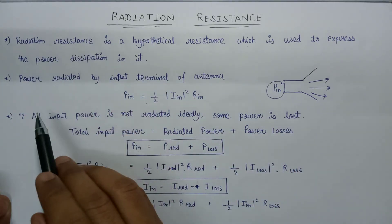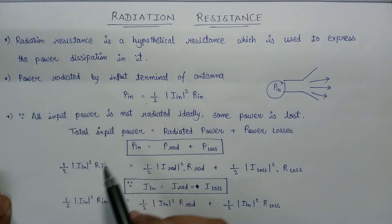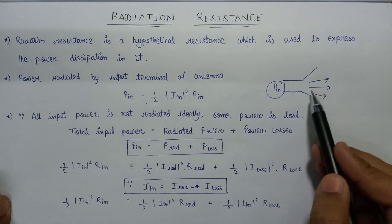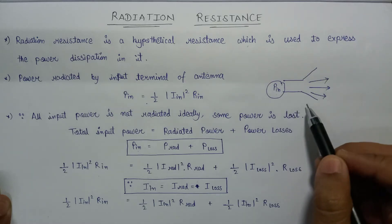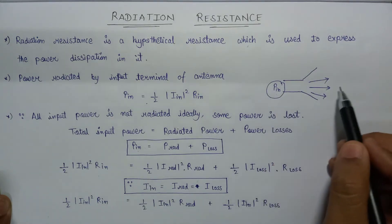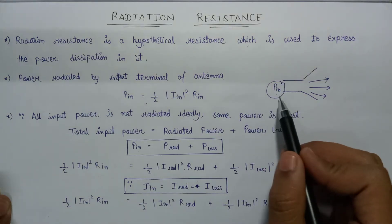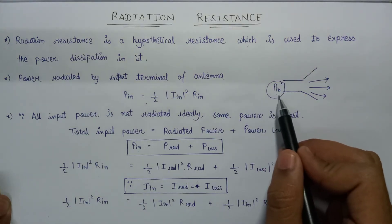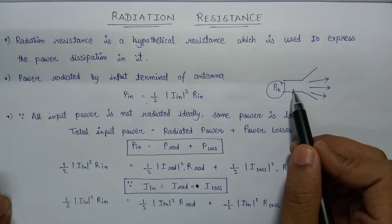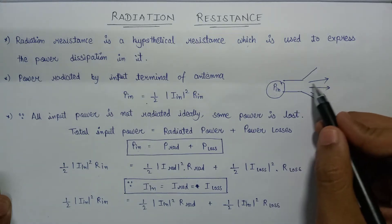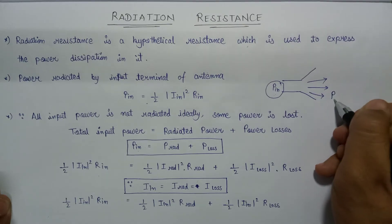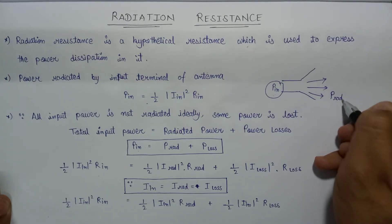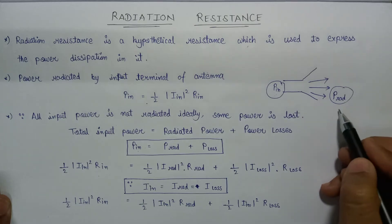If we talk about the power radiated by the input terminal of an antenna, first look at this figure. Here is the structure of an antenna with an input terminal and an output terminal. At the input terminal, the power P_input is being supplied to the antenna, and the antenna will radiate in this direction. The power radiated by the antenna is given as P_radiated.